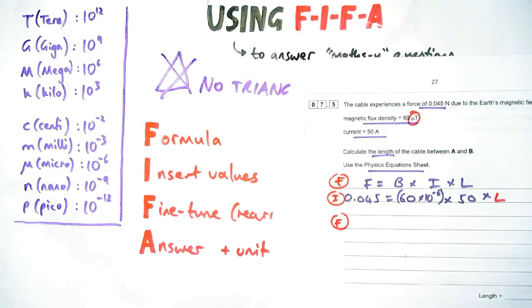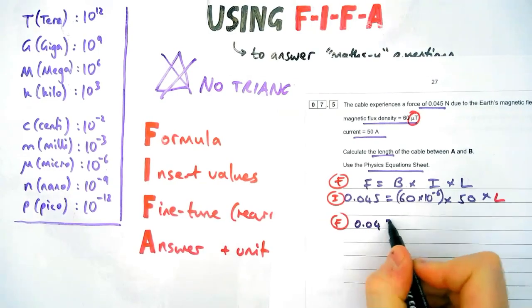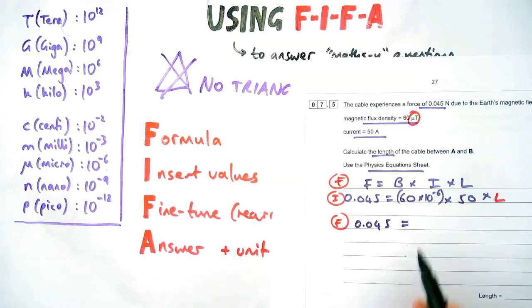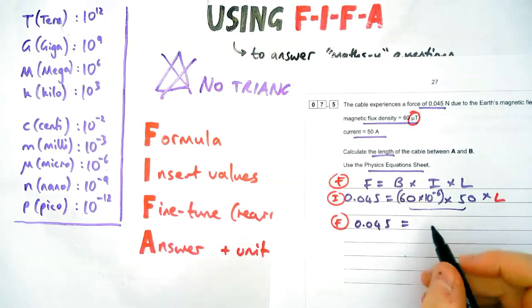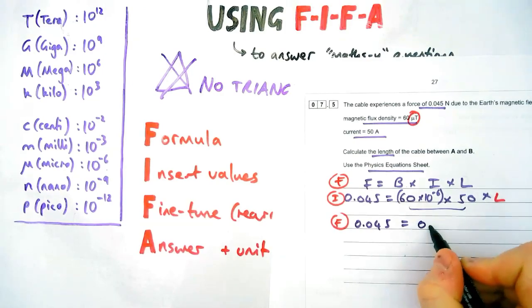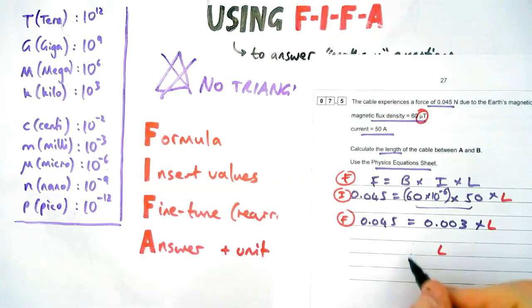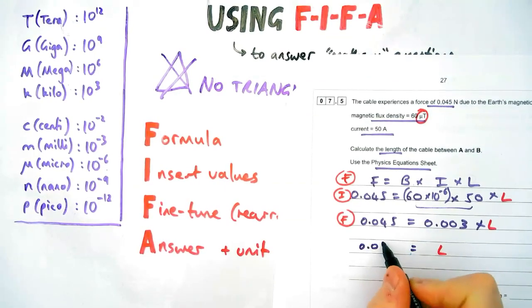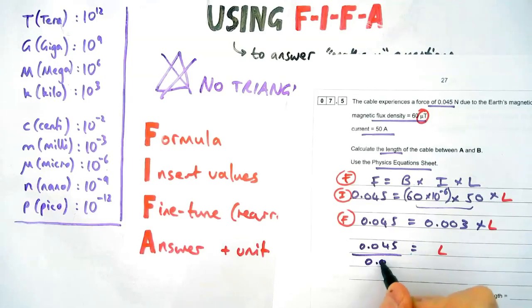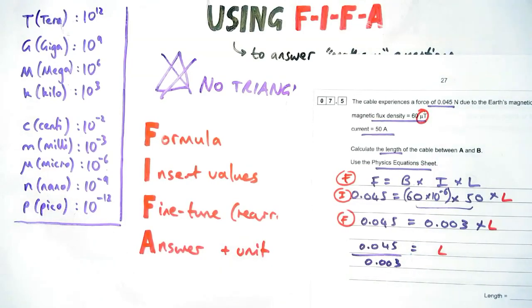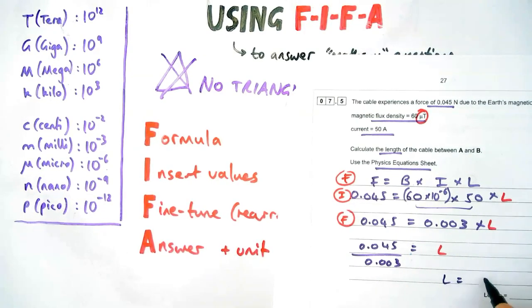Now fine tuning: I would always advise if you've got a longer equation like this, you can always just work, make it simpler for yourself to figure out what to do by doing any calculations. So here I've got 60 times 10 to the minus 6 times 50, so maybe put that into your calculator first, make your life easier. Now I've got to get rid of by times 0.003 which is next to my L. So same as last time, I'm going to divide by 0.003, which if you put that into your calculator happens to be 15 meters.